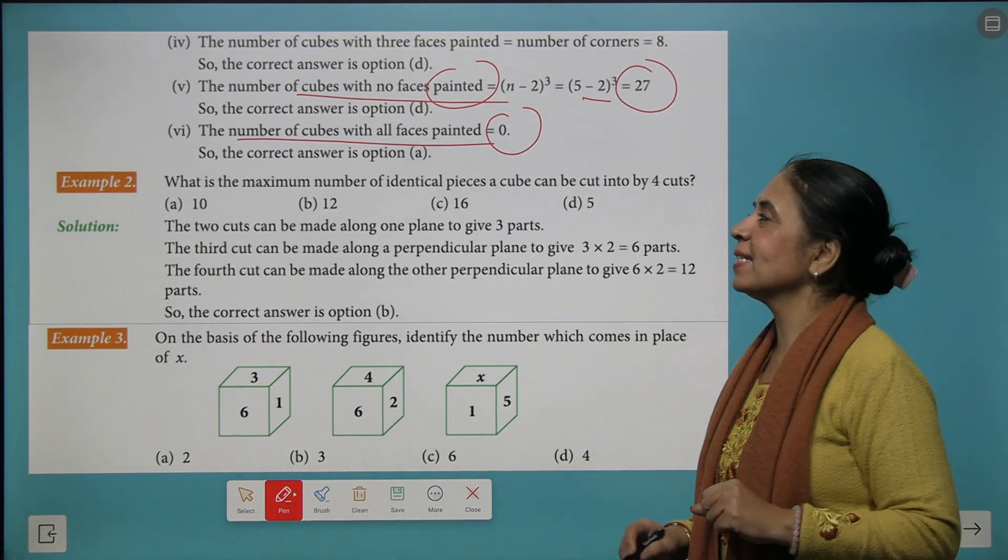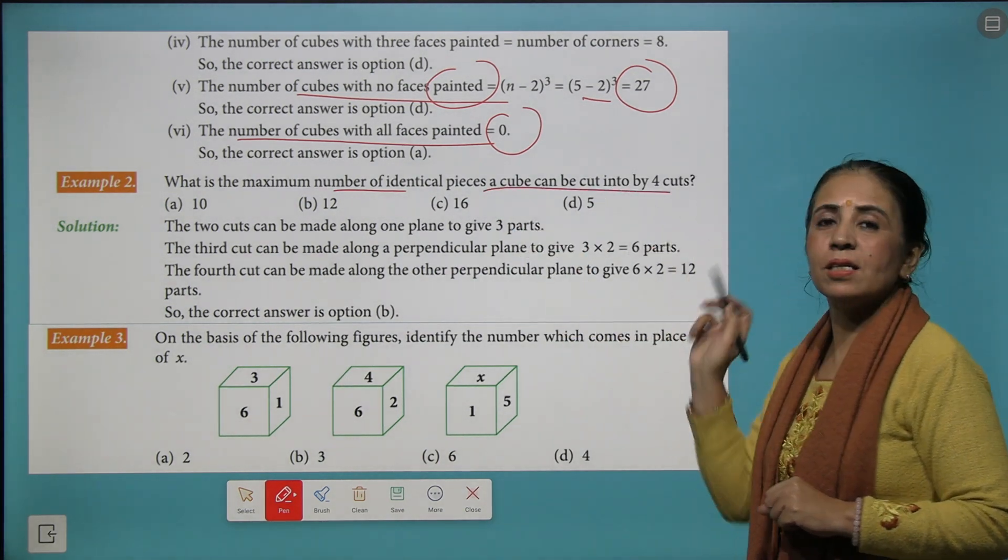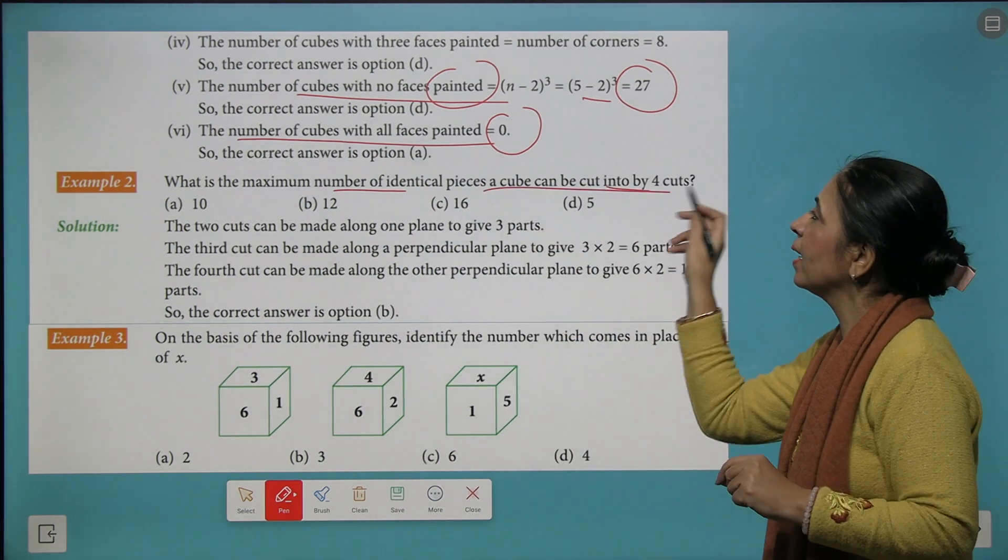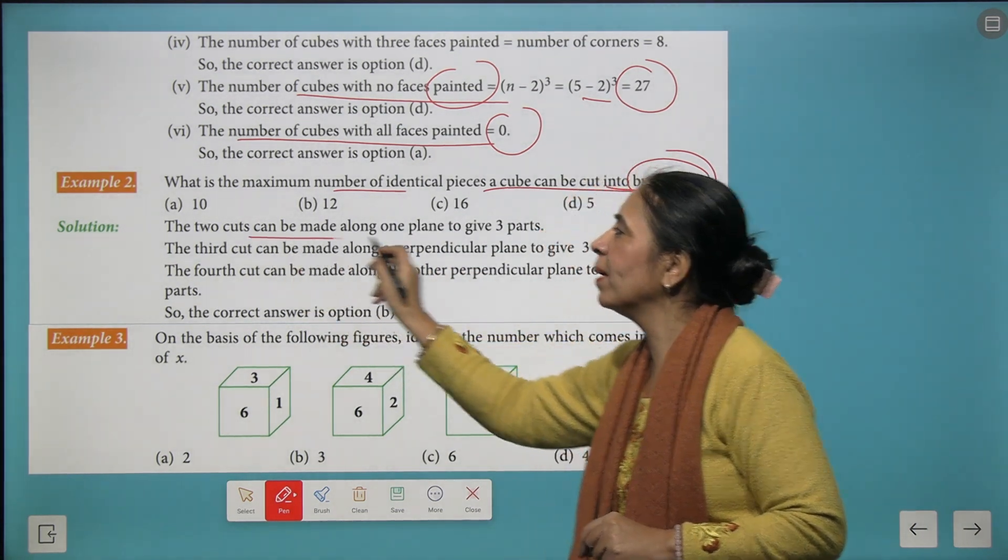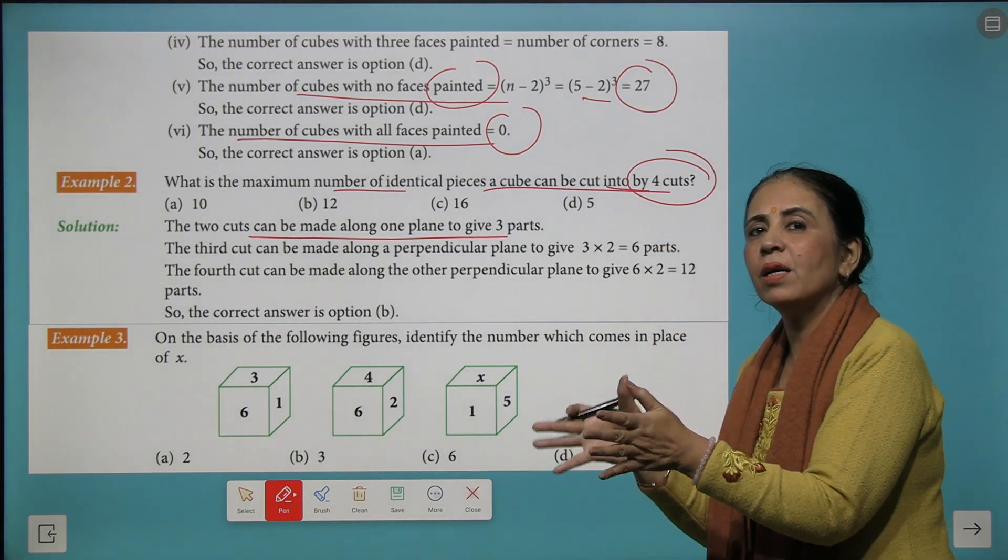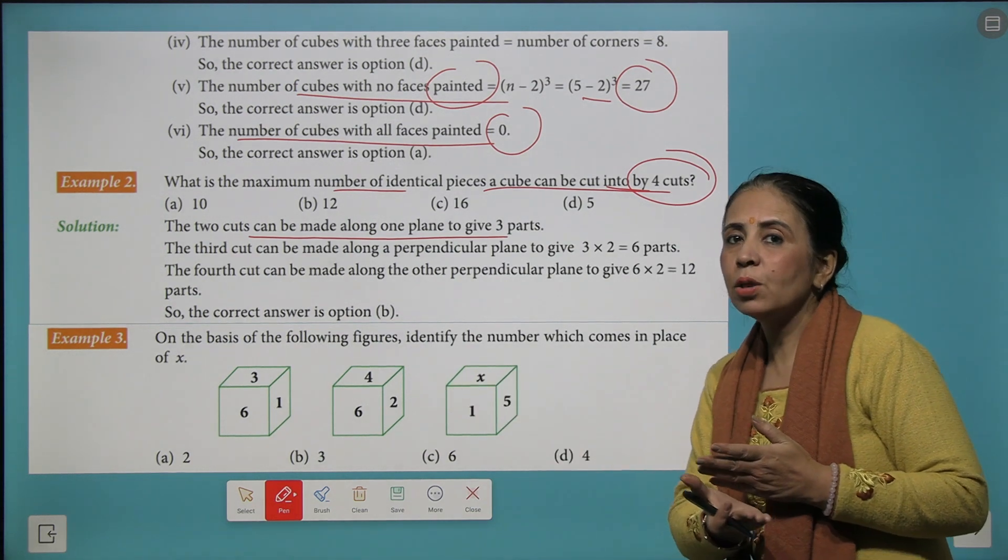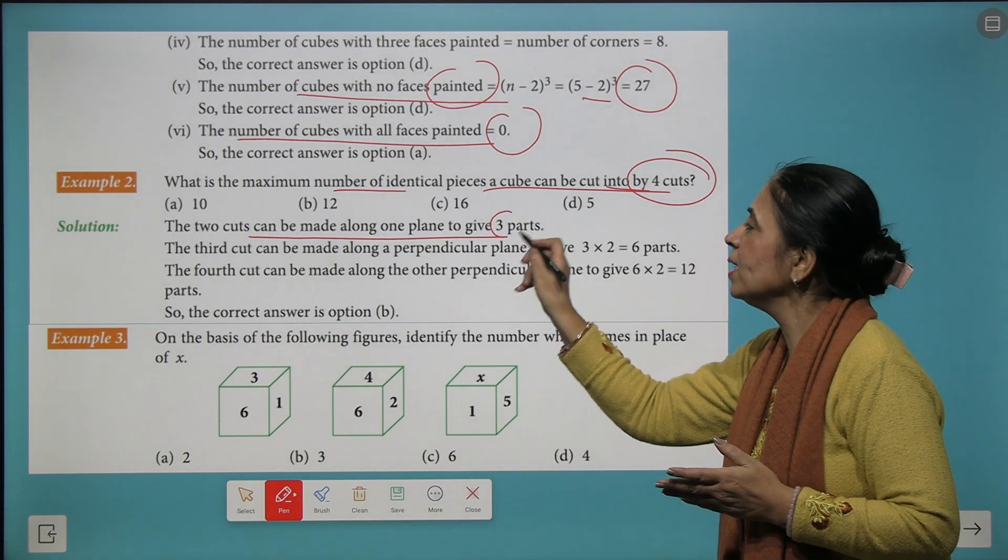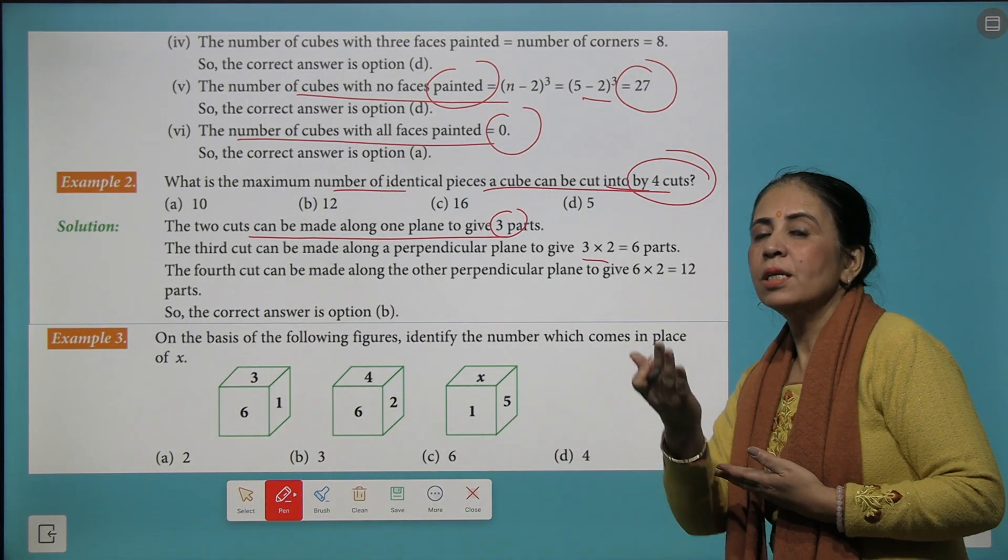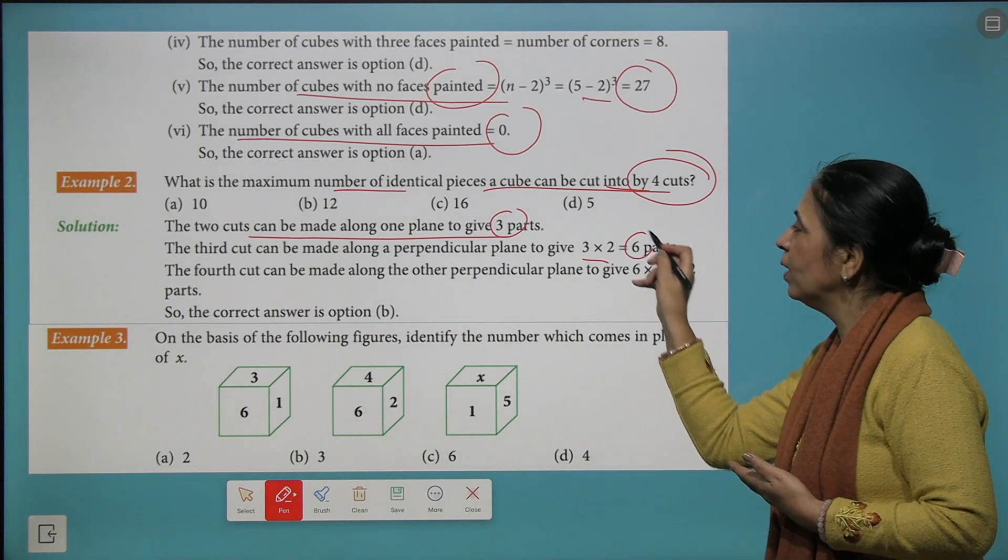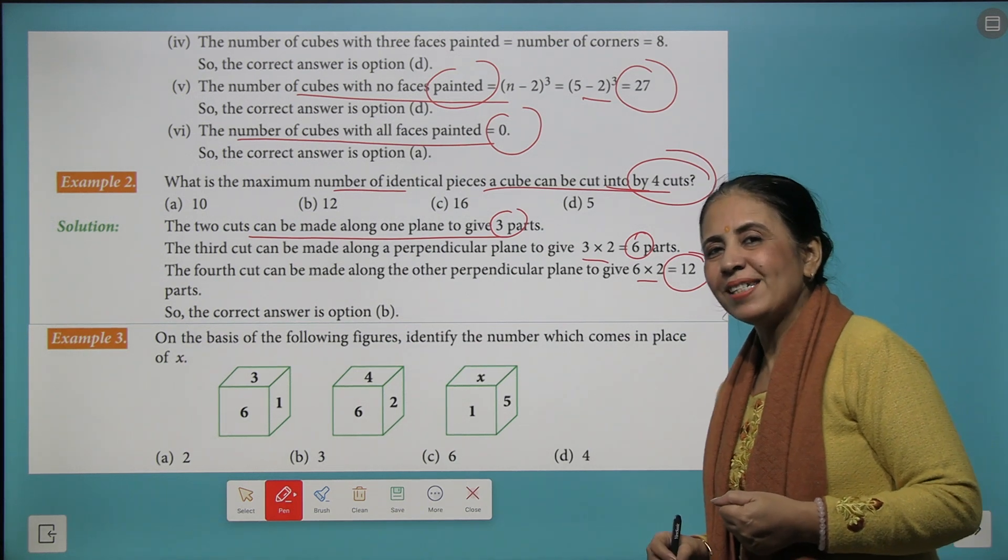Coming to the next example, what is the maximum number of identical pieces of a cube that can be cut by 4 cuts? So first thing we have to remember is that 2 cuts divide the cube into 3 pieces. Now we make another horizontal cut, so this 3 times 2 turns to 6 and another horizontal cut, again double of this, we get 12 parts. So 12 becomes your right answer.